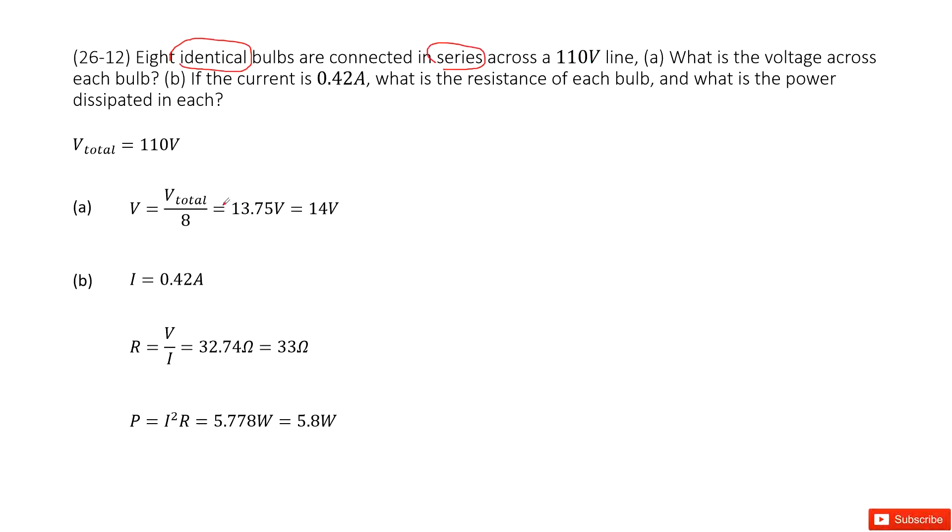So that means for each lightbulb, the voltage becomes V_total divided by 8. It is 14 volts.